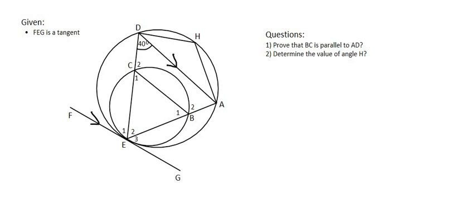In this question we have been told that FEG is a tangent to the big circle and the small circle. They show by these arrows that those two sides are parallel. The first question says prove that BC is parallel to AD.